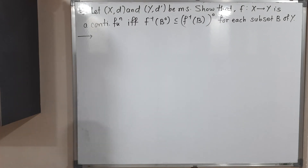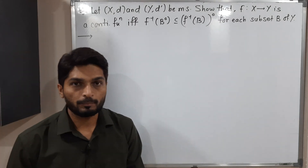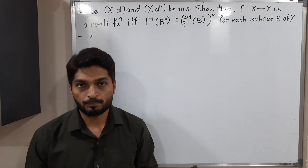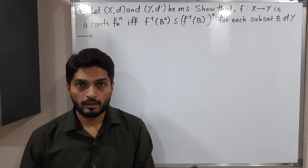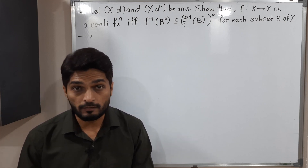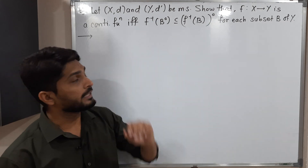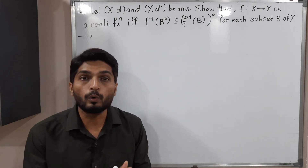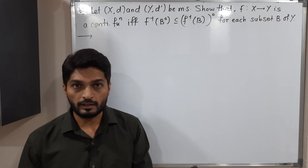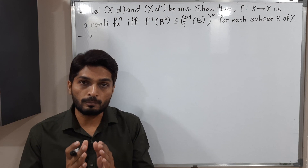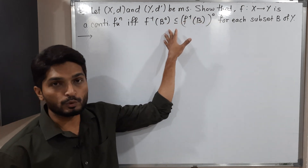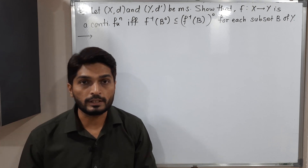In this video we are going to discuss this example. We have two metric spaces (X,d) and (Y,d'). f is a function from X to Y. We have to prove that f is continuous on X if and only if f⁻¹(B°) is a subset of (f⁻¹(B))°, and this is true for each subset B of Y. Since it is an if and only if condition, we will assume one part first, prove it, and then go for the converse part.